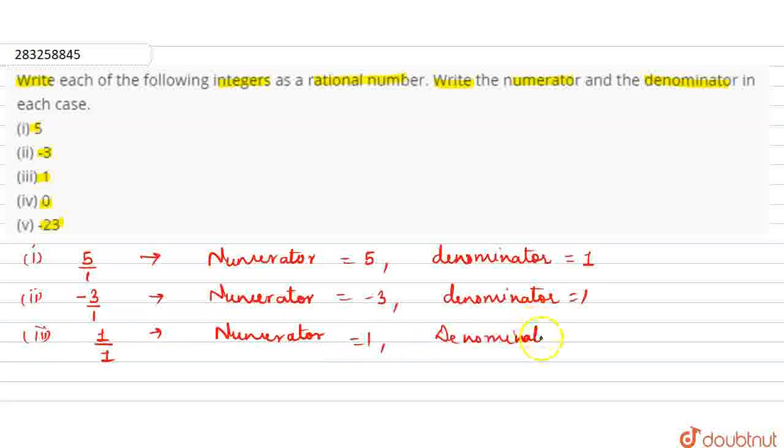The next one is 0. If we write 0 by 1, the numerator is equal to 0 and denominator is equal to 1.